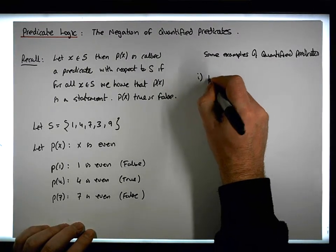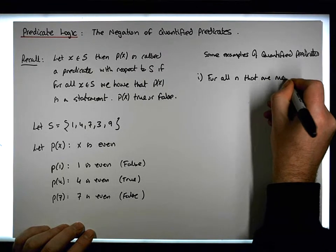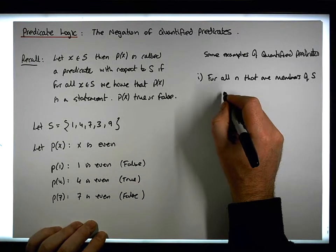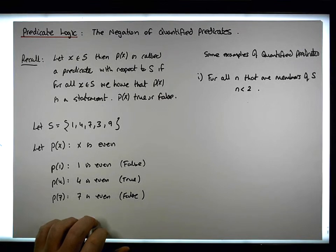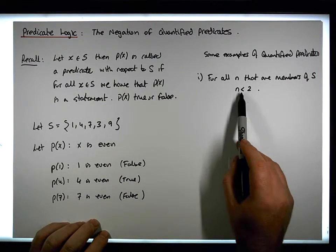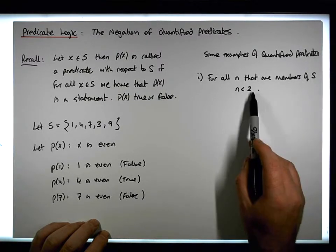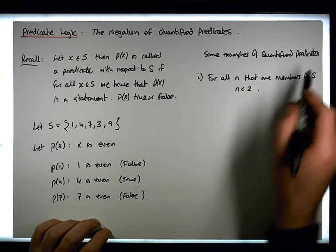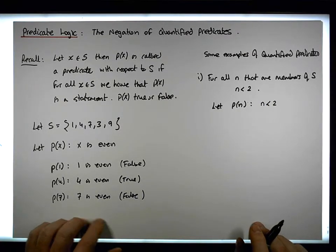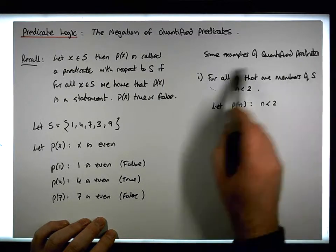The first example: for all n that are members of S — where S is defined here — we have that n is less than 2. In this situation, the predicate is the statement 'n is less than 2', and the quantified part is where we say 'for all n that are members of S, n is less than 2'. Let's write this as a quantified predicate. We let P(n) be the statement that n is less than 2, where n is an element of S. Then we construct the quantified predicate: for all...